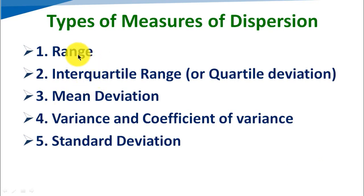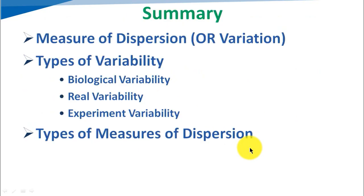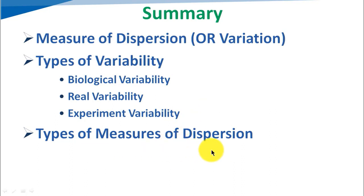We generally divide the types of measure of dispersion into: range, interquartile range (also known as quartile deviation), mean deviation, variance and coefficient of variance, and standard deviation. In this video we have seen measure of dispersion, what is variation and dispersion, types of variability — biological, real, and experiment — and the types of measure of dispersion. We will start with range and interquartile range from the next video. Thank you for watching. Please like this video and subscribe to my channel Pharmaplanet.